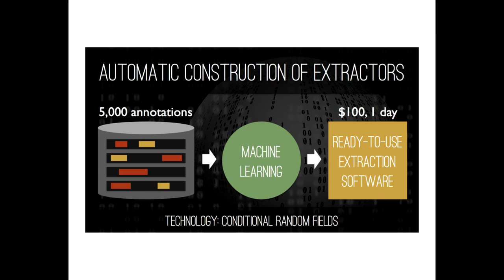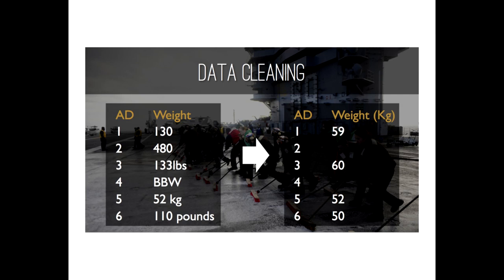Once you get all the extracted data, it typically comes in messy form. For example, one extractor for body weight returns: weight 130, weight 480, weight 133 pounds, 'big beautiful woman,' 52 kg. They come in different units, or unitless. If we want a searchable database, we want normalized data — everything in kilograms. How do we know if 130 is kilograms or pounds? In our domain, if it's more than 99, it's pounds. We have scripts to clean up all this data to build the database where we can find connections.